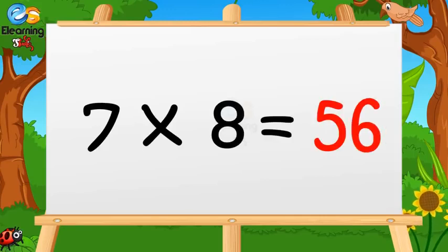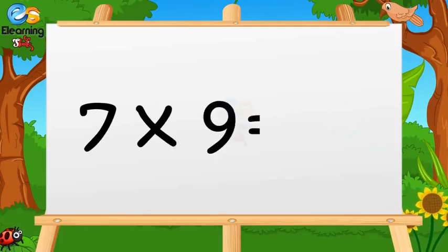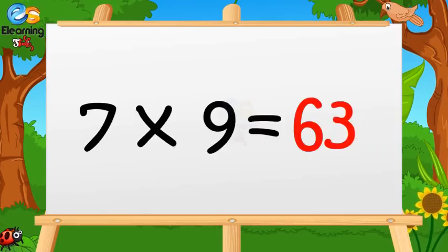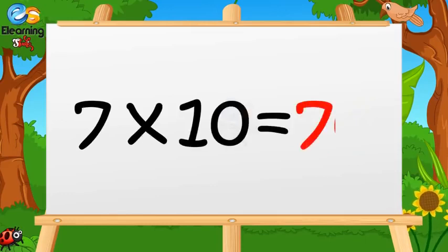Seven eights are fifty-six. Seven nines are sixty-three. Seven tens are seventy.